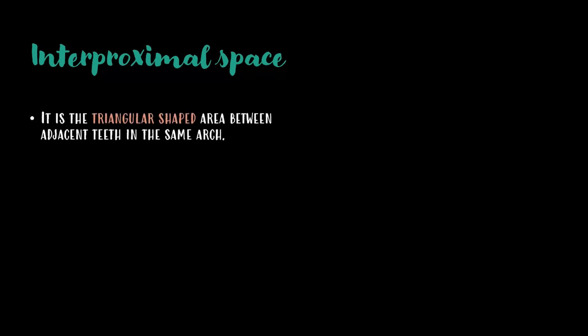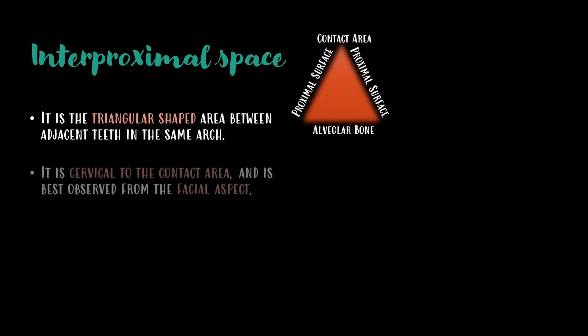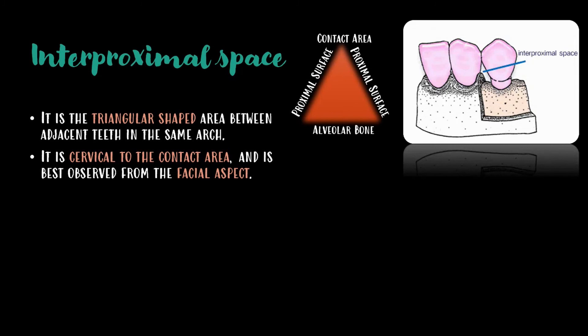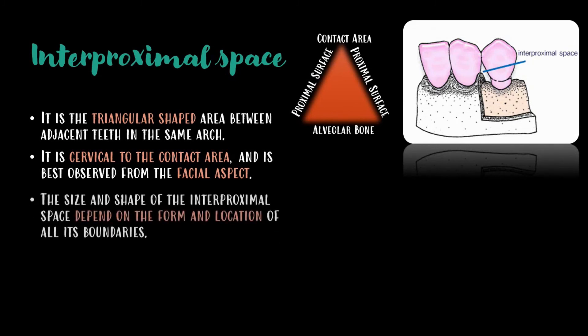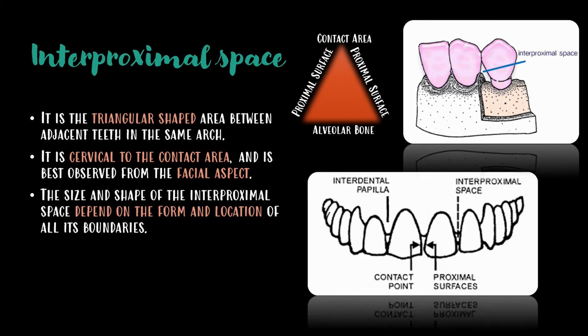The interproximal space is the triangular-shaped area between adjacent teeth in the same arch. The triangle is formed by alveolar bone at its cervical base, proximal surfaces of adjacent teeth on its sides, and the contact area of adjacent teeth at its apex. These structures are thus the boundaries of the interproximal space. It is cervical to the contact area and is best observed from the facial aspect. The size and shape of the interproximal space depend on the form and location of all its boundaries. It aids in the self-cleaning process of the dentition.